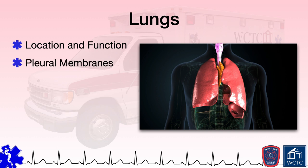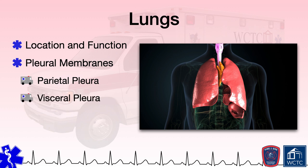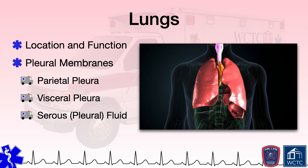Each lung resides within a double-layered serous membrane called the pleura. The outside portion connected to the chest wall is called the parietal pleura. The inside portion attached to the lung itself is called the visceral pleura. In between these two layers of membranes is a pleural fluid that creates surface tension to attach the parietal and visceral pleura to each other while reducing friction between the two layers, allowing them to glide over each other during respiration. The pleural space contains only about two to ten milliliters of pleural fluid. The parietal and visceral pleura meet at the hilum, a wedge-shaped area on the central medial aspect of each lung where bronchi, arteries, veins, and nerves enter and leave the lungs.